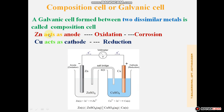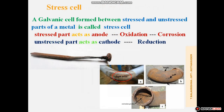Remember: whichever composition is highly reactive acts as the anode and is ready to participate in the oxidation reaction — that is, it undergoes corrosion. Among Zinc and Copper, Zinc is highly reactive, so it acts as the anode and undergoes corrosion easily.